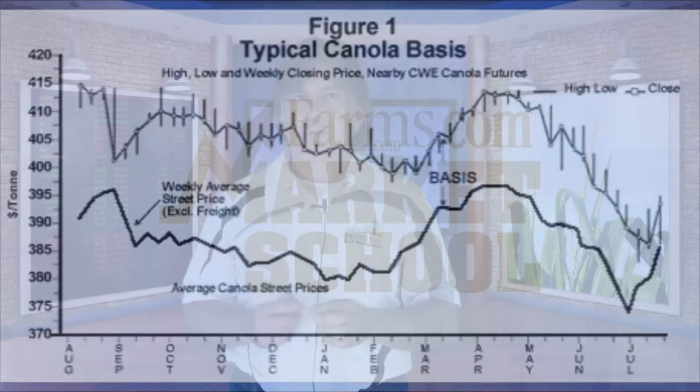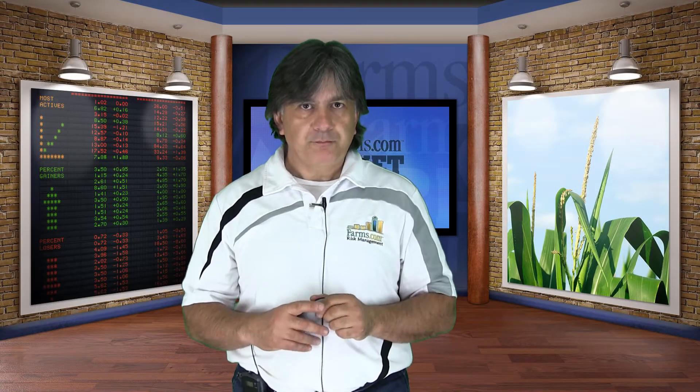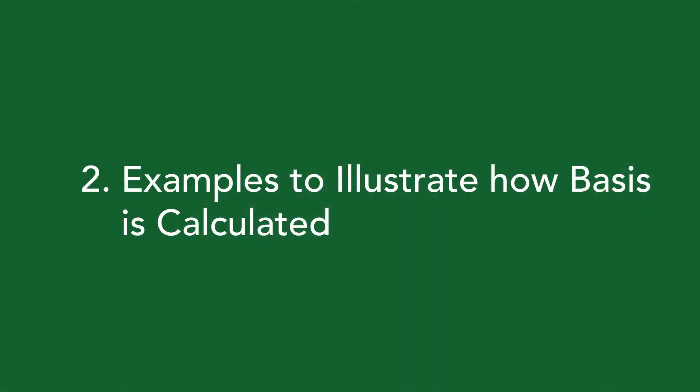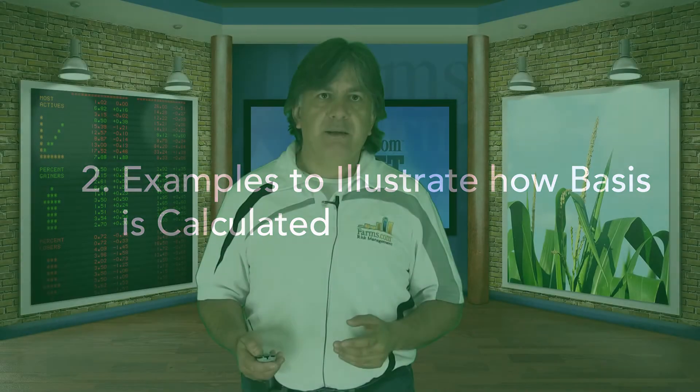Basis is your second biggest risk. Corn futures can drop from US $7 a bushel — like in 2012 when we went to $8.49, or in 2008 — and it can quickly drop to about $3 a bushel. But your local basis rarely, if ever, has made such a wide move. There is an exception to the rule, and we have seen that, but it's rare.